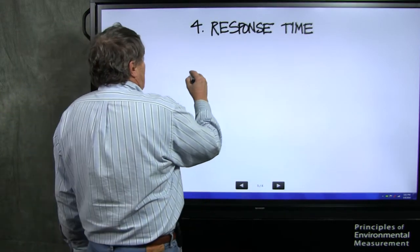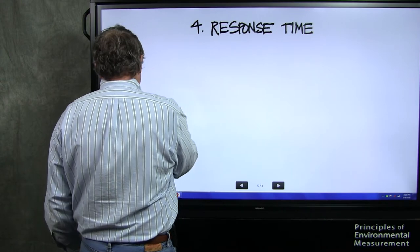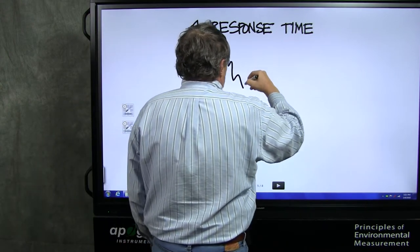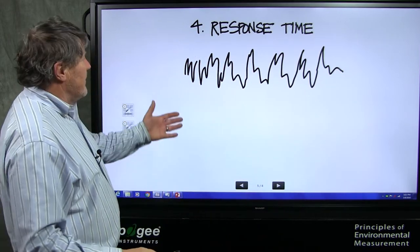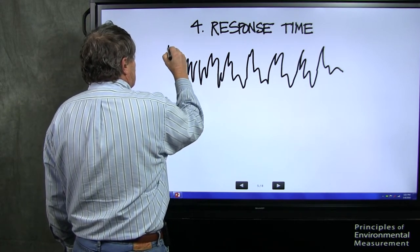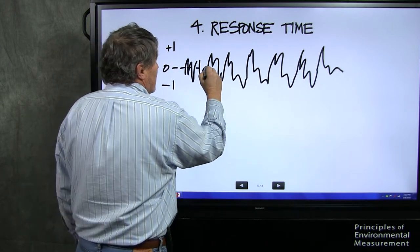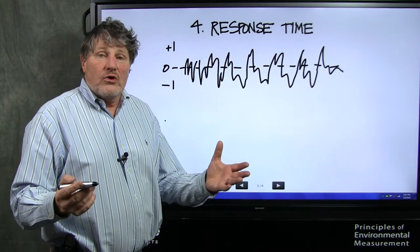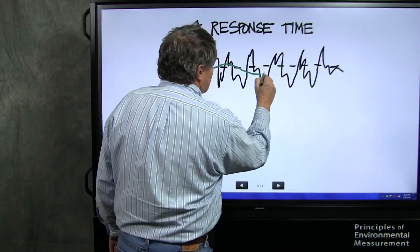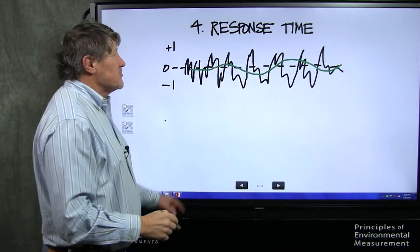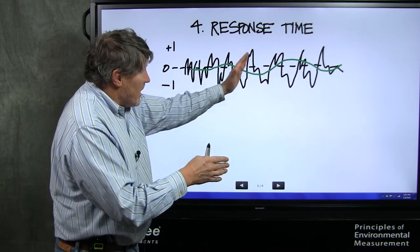Number four, response time. If this is time here, signals can look like this. A cheaper signal has a lot of noise. And this might be plus one degree and minus one degree, and zero is right here. So if this signal is bouncing around, what do you do? You do a running average, and I'll show that in here in green. You might have a running average that looks like that. That's much more accurate, but you have to wait to get your data. You have to leave it on there for several seconds to average this.